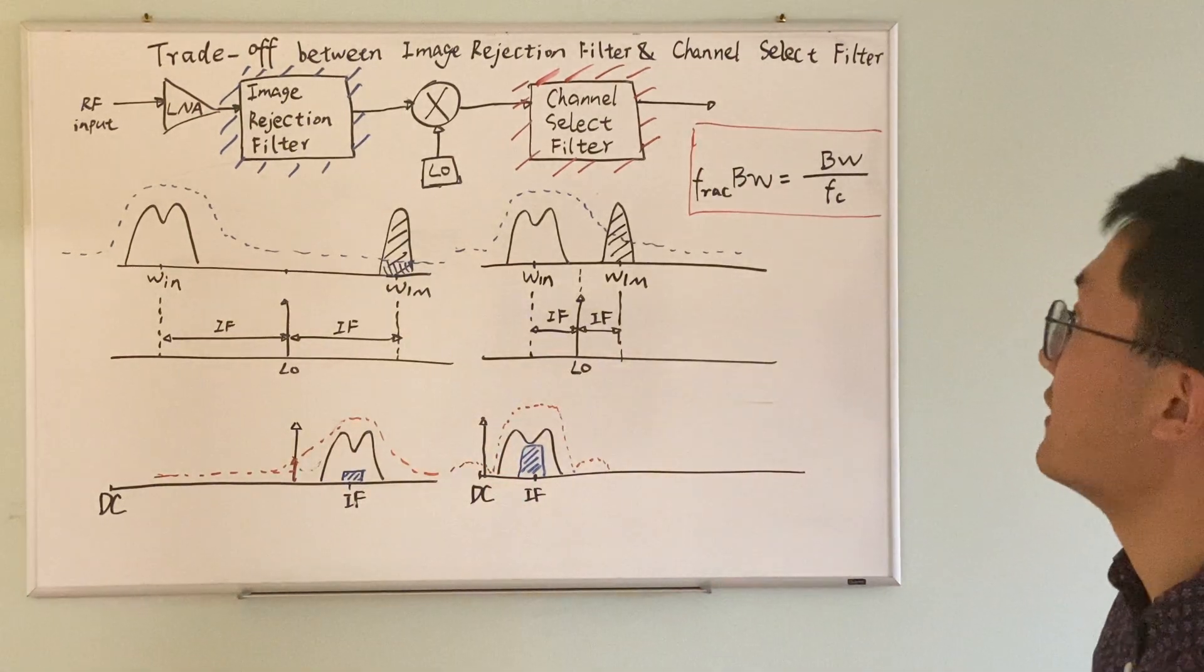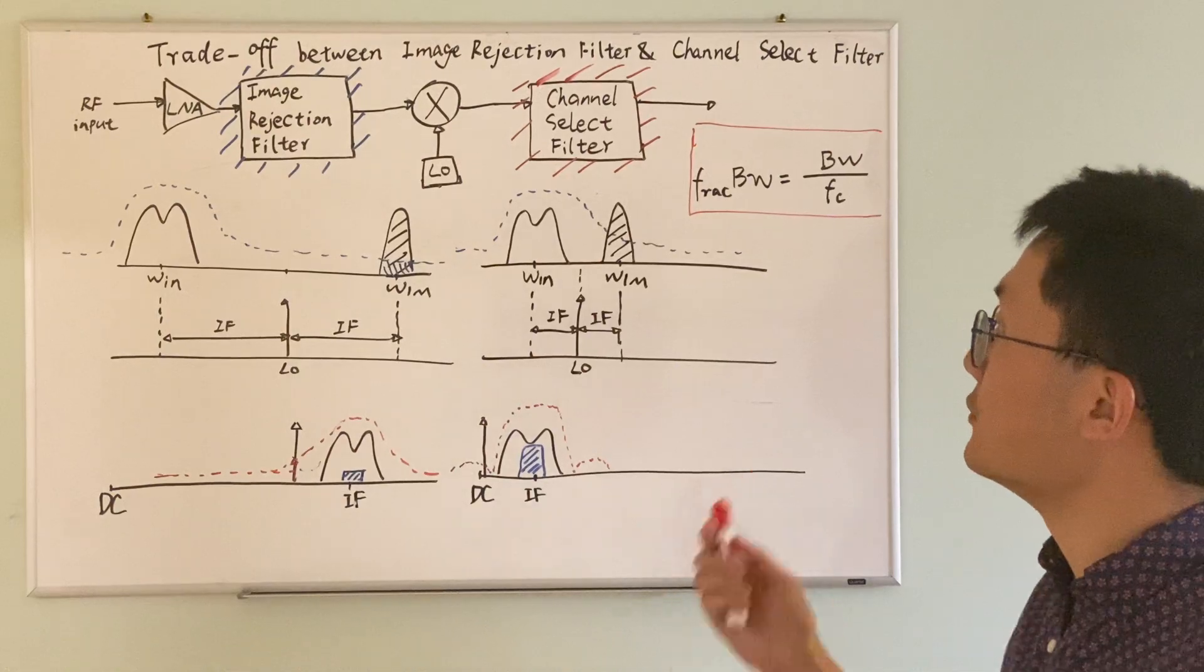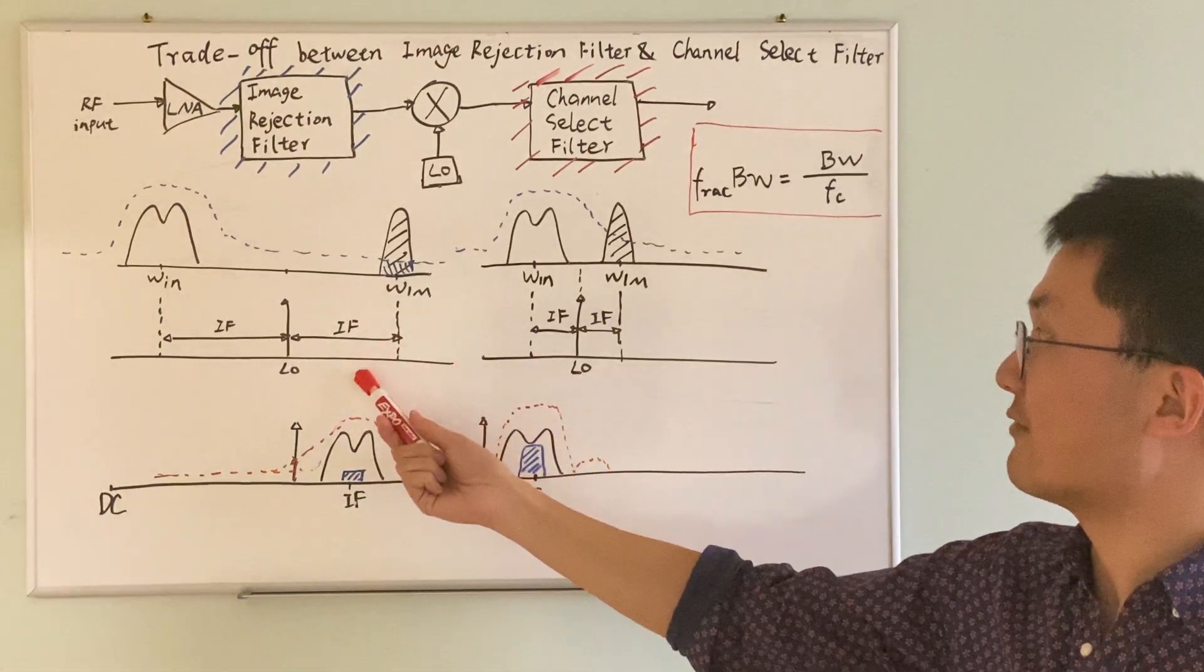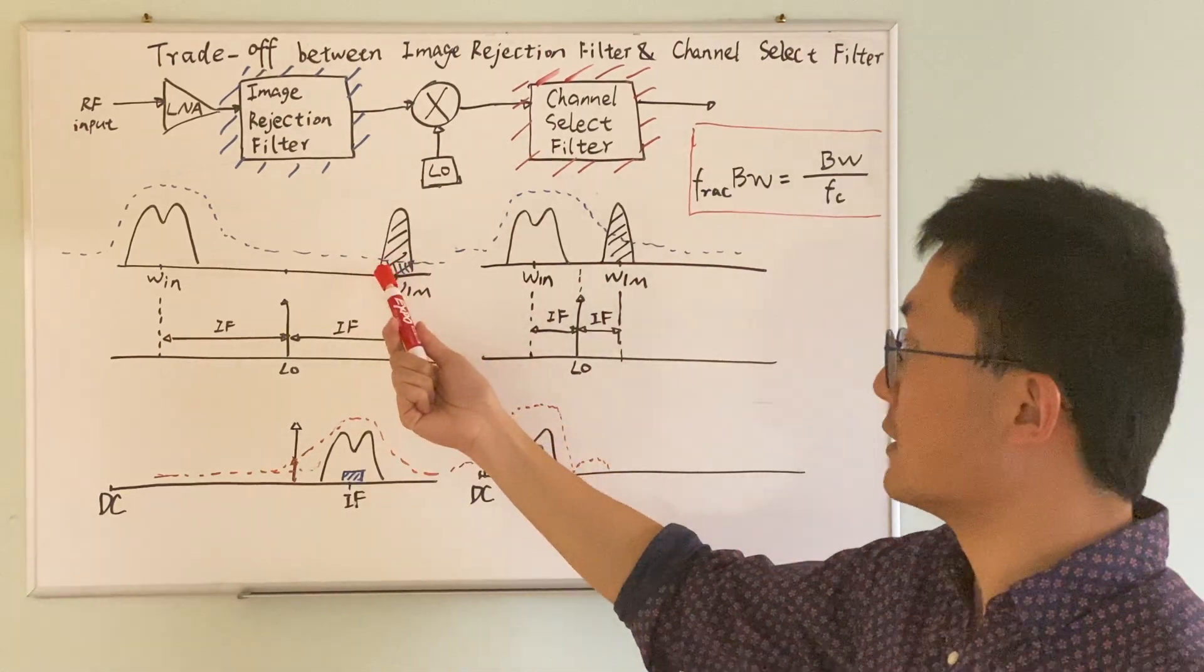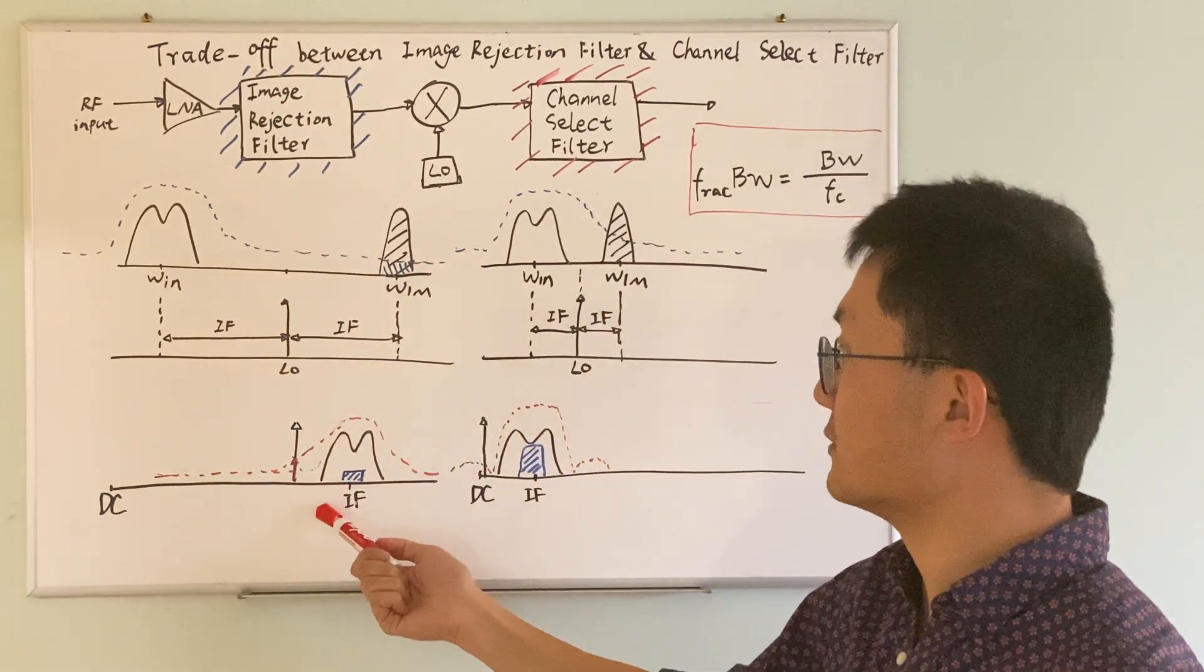So the trade-off here is that if you choose your IF to be very large, then you get very good image rejection. However, you get poor channel selection.